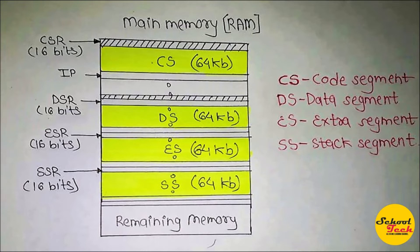The 8086 processor refers to every segment of memory using a 16-bit register called a segment register — CS, DS, SS, and ES — which are part of the BIU as shown in the architectural diagram. Segment registers like CS are used to store the starting address of the particular segment, as shown in the segmentation diagram.